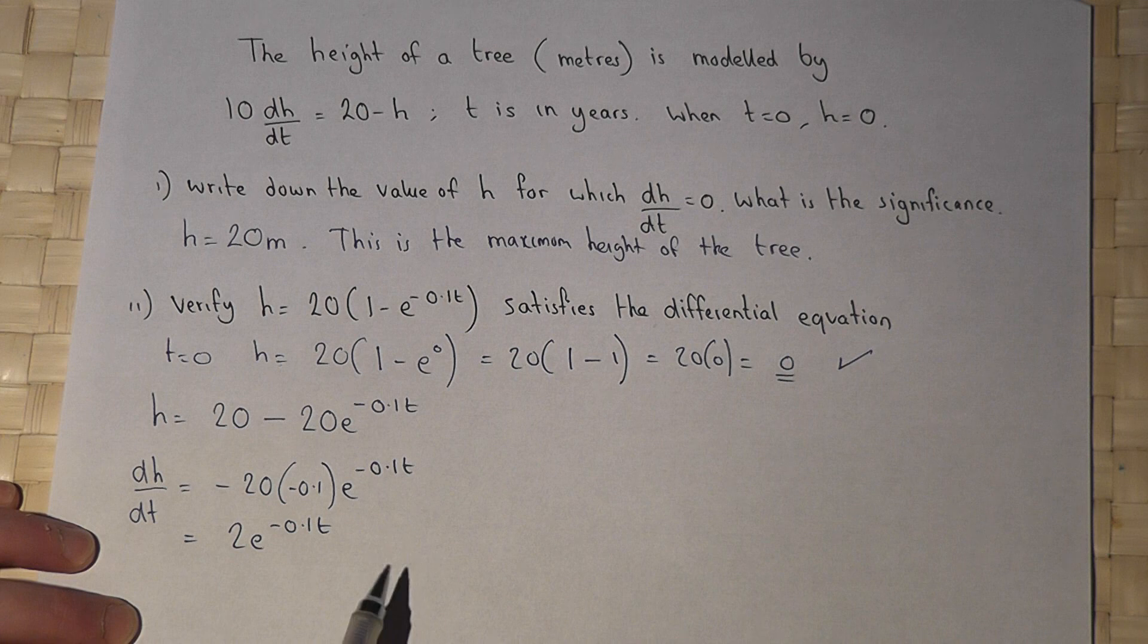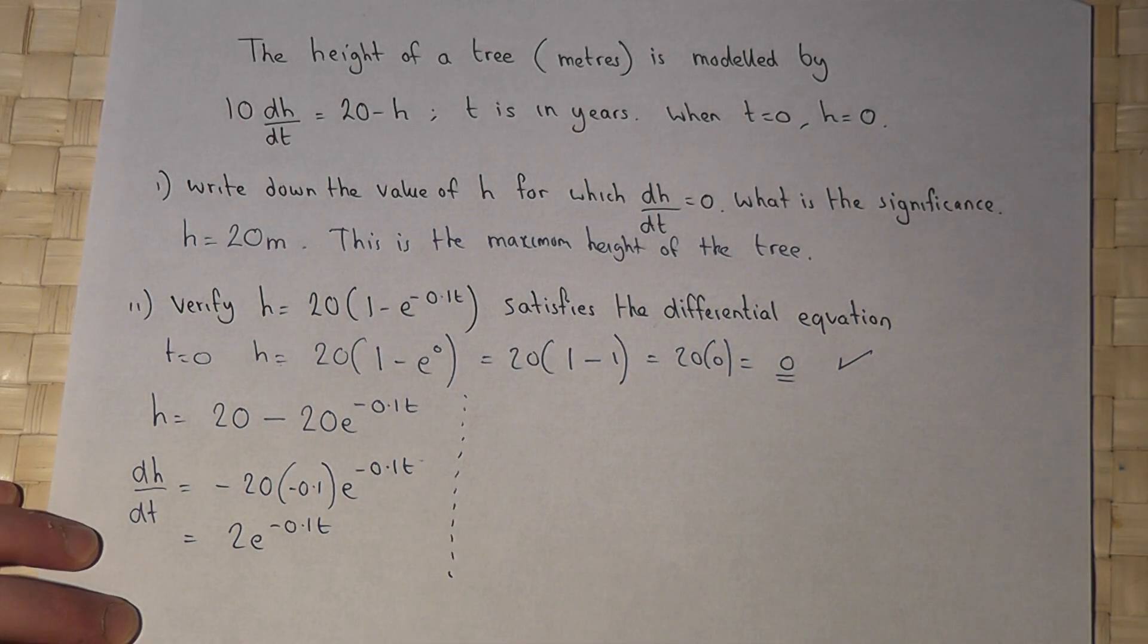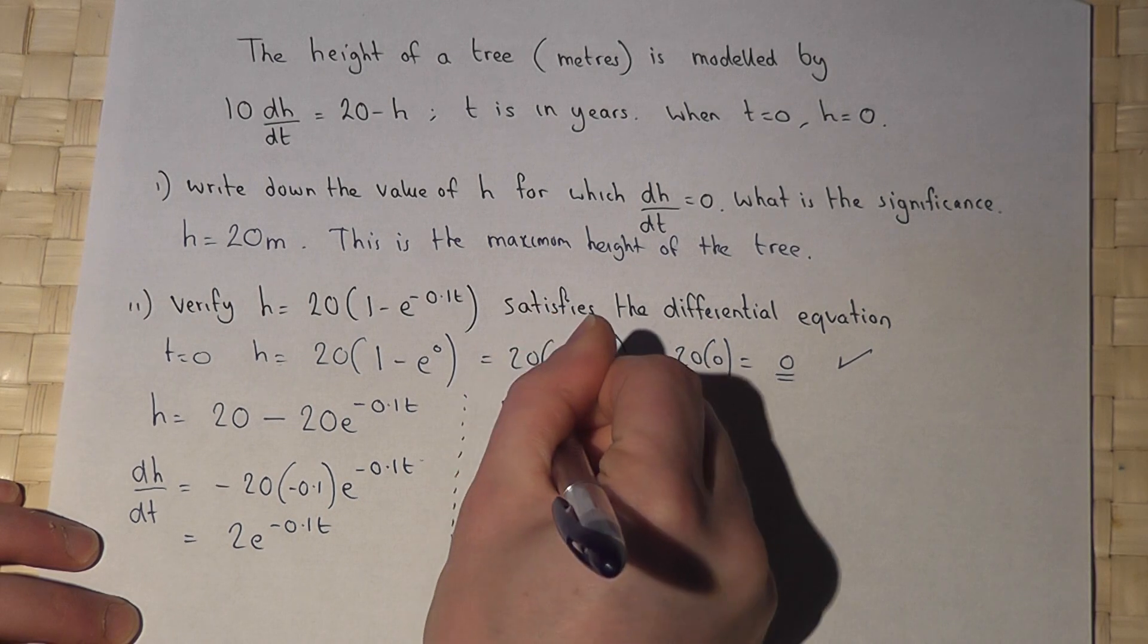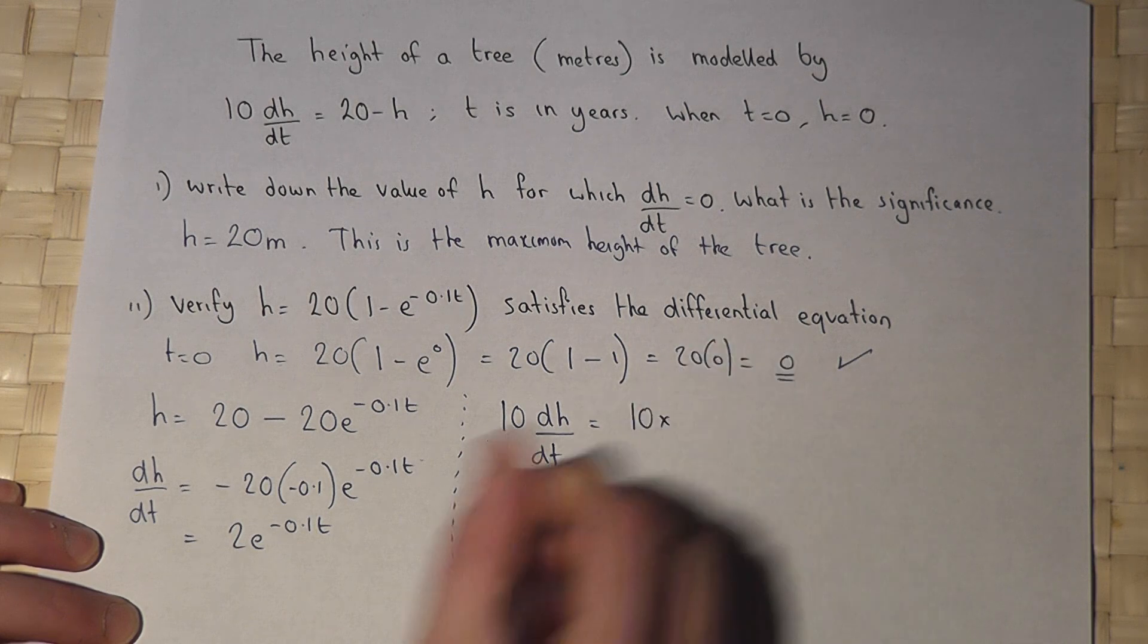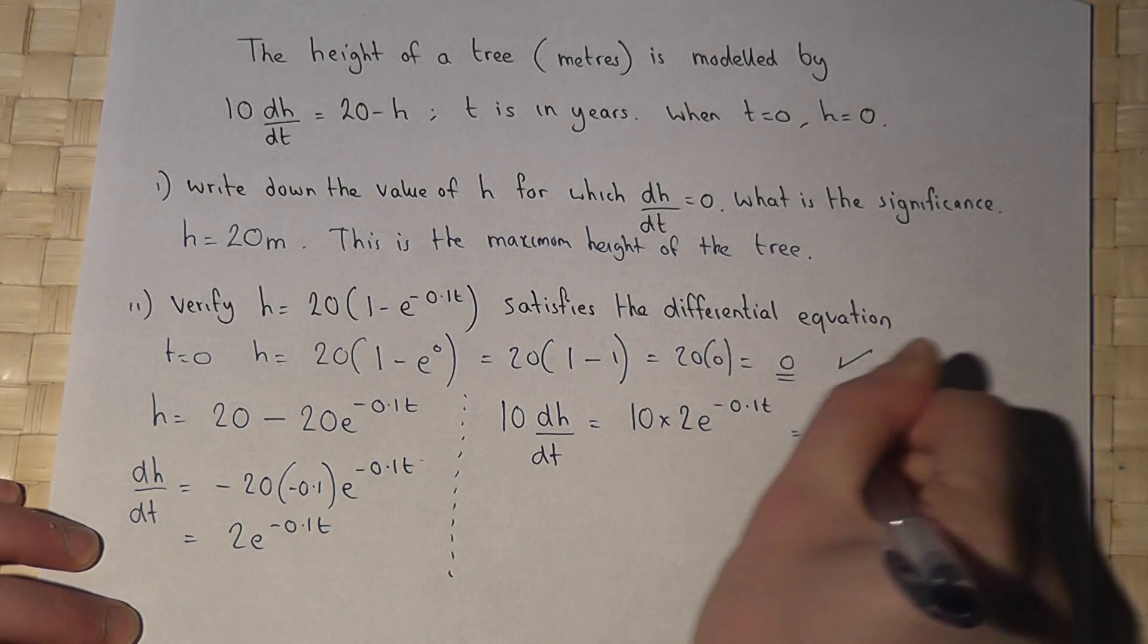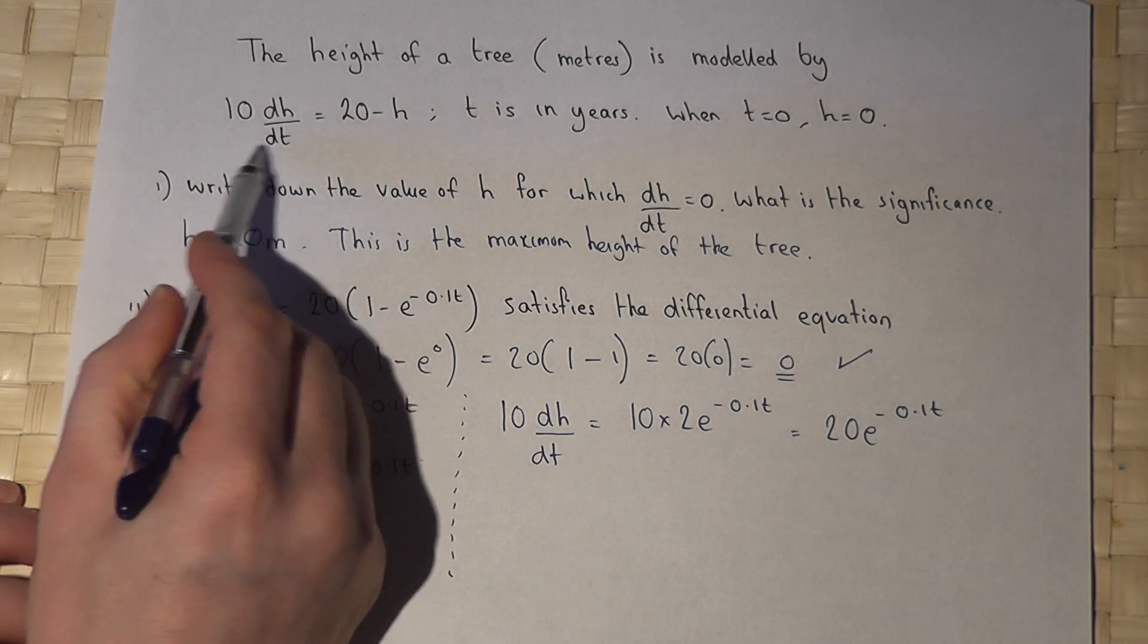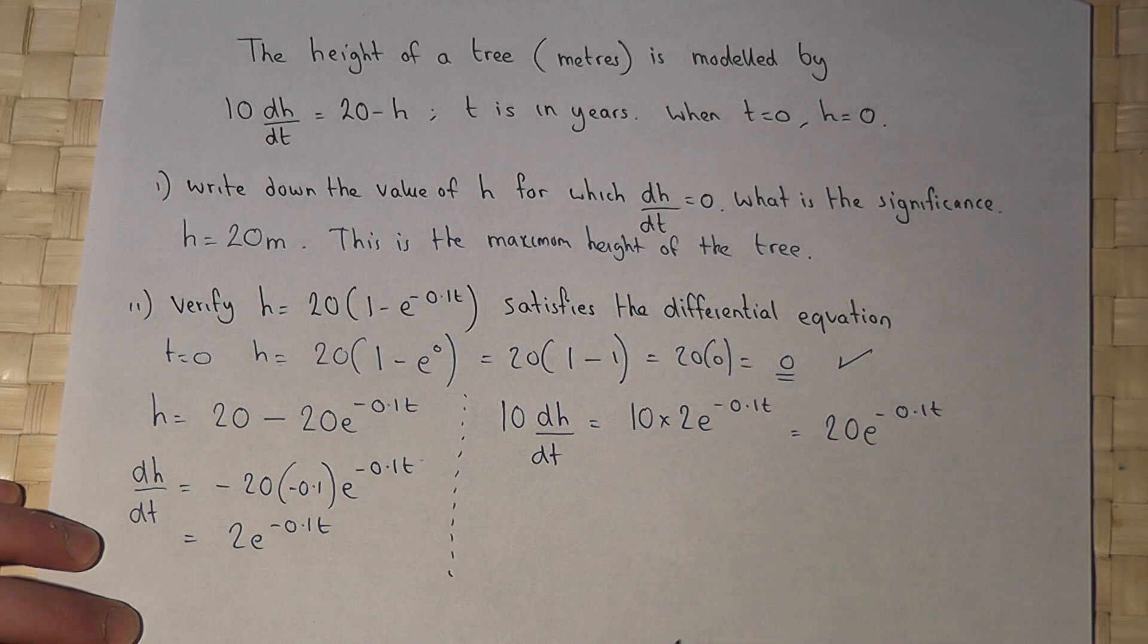So dh by dt equals minus 20 times minus 0.1 is 2e to the minus 0.1t. So I've now found an expression for dh by dt. So let's go back to the original differential equation. 10 lots of dh by dt equals 10 lots of this,